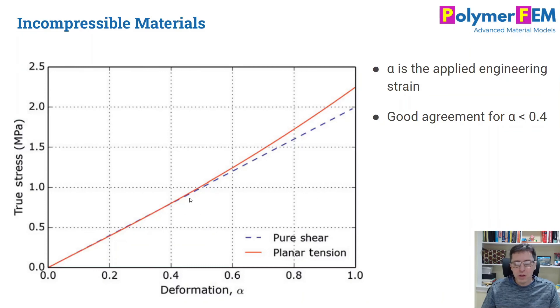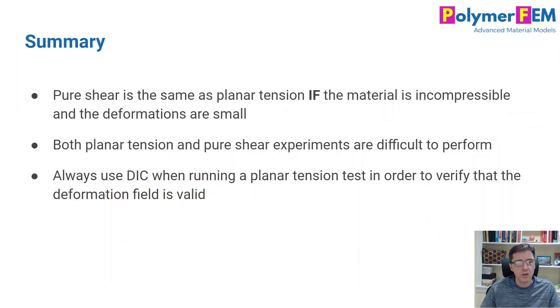We'll see that we get a pretty good agreement between these two different loading modes in terms of converting back and forth if the strains are about 30 to 40 percent. If they're more than that, there will be some deviation and errors in the conversion. But otherwise, it actually works. It's kind of an interesting conversion.